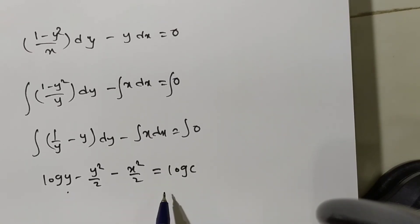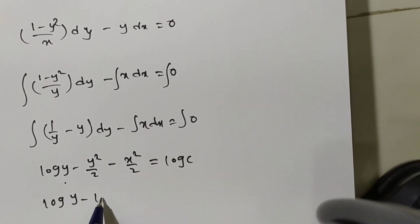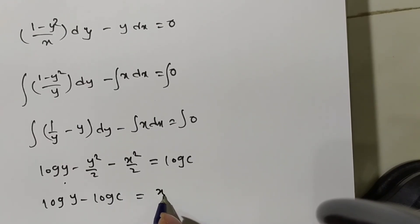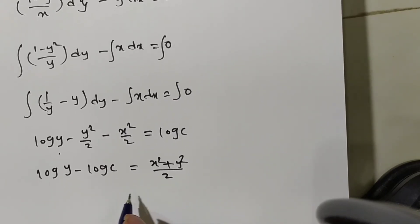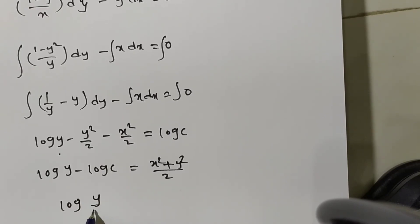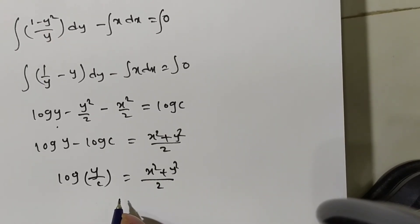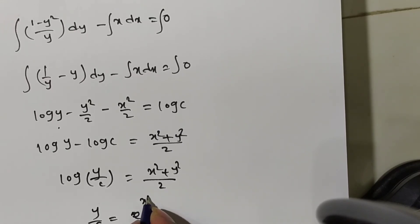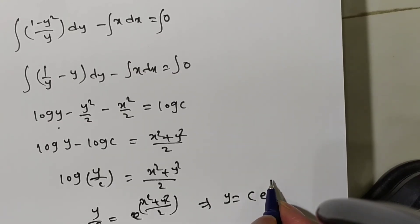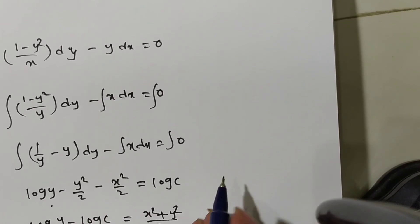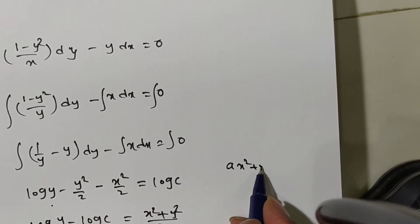Applying the antilog on both sides: y/C = e^((x² + y²)/2), which implies y = C · e^((x² + y²)/2). This is the orthogonal trajectory of the given family of curves Ax² + y² = 1.